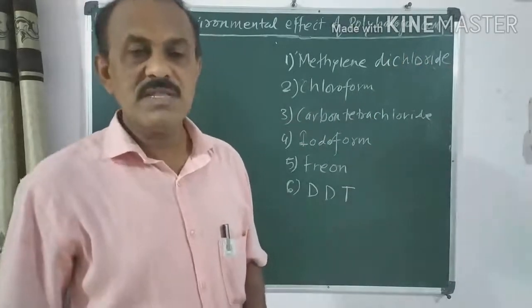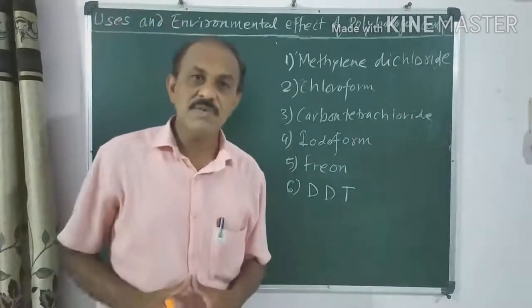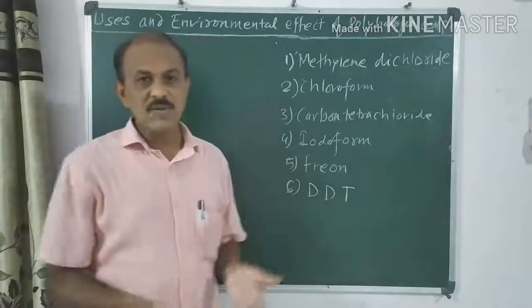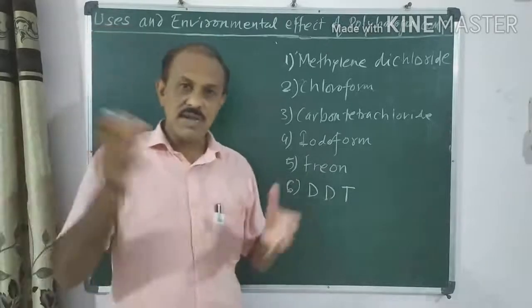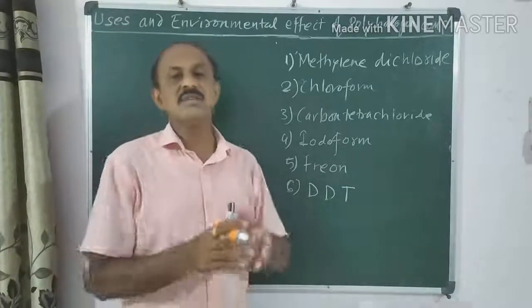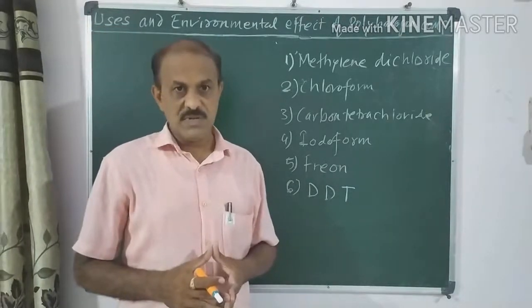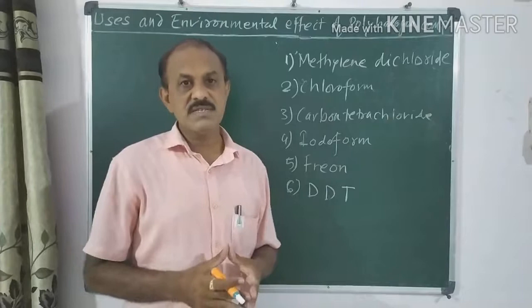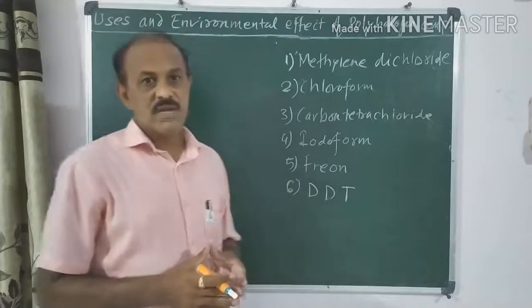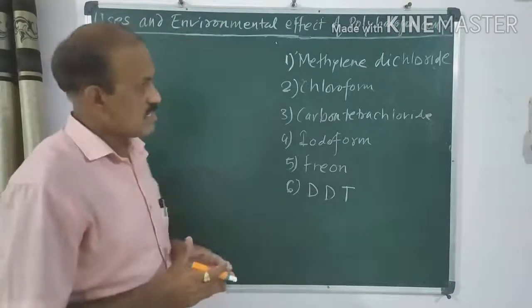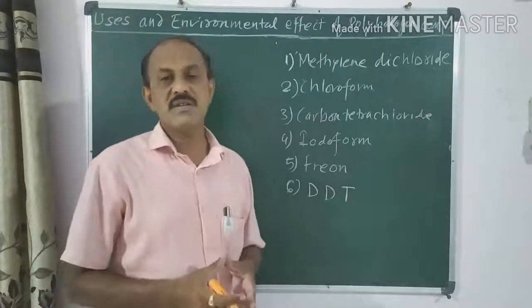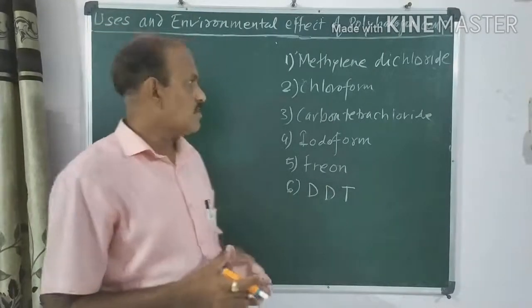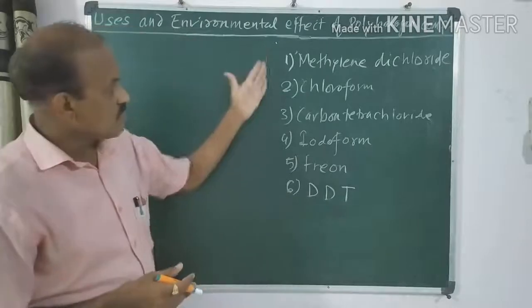Now, what is a polyhalogen compound? A compound which contains two or more halogens is called a polyhalogen compound. So we have to discuss the uses and environmental effects of polyhalogen compounds.